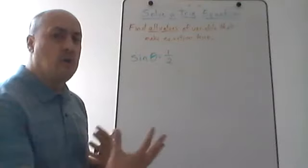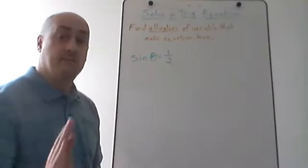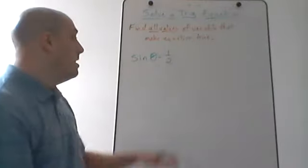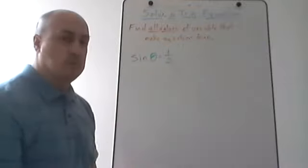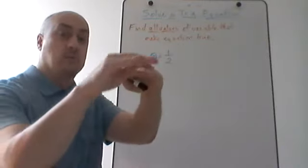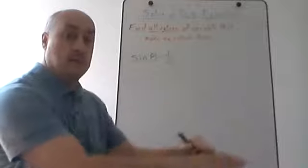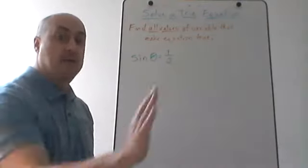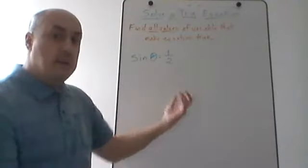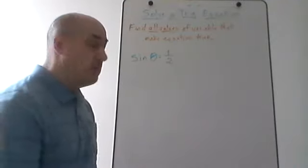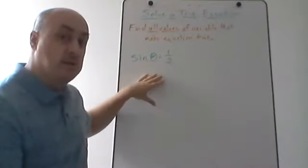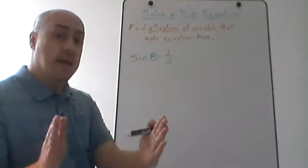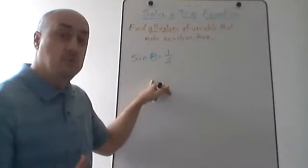This is because all the trig functions are periodic. The sine function keeps going like a wave up and down between positive one and negative one. So if I want to know where sine of theta equals one half, everywhere that y equals one half on that graph is a solution. Since that graph passes one half every time on the way up and on the way down, there's going to be an infinite number of solutions.